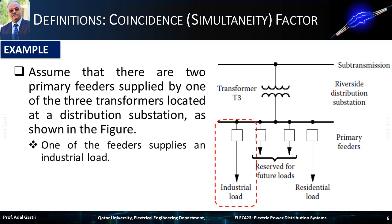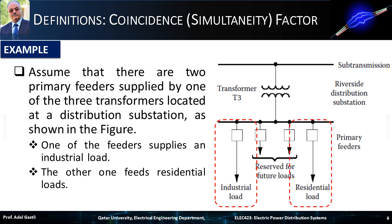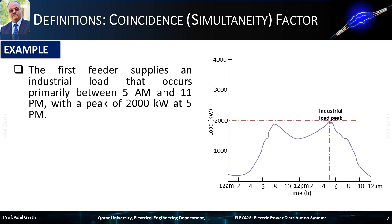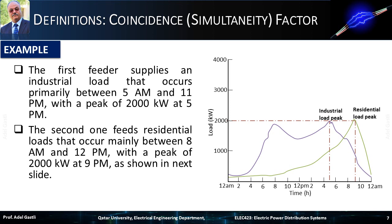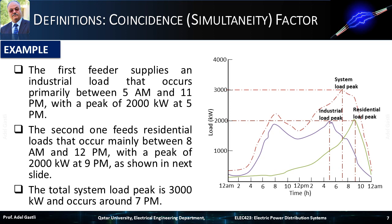One of the feeders supplies an industrial load; the other feeds residential loads. The first feeder supplies an industrial load that occurs primarily between 5 a.m. and 11 p.m., with a peak of 2,000 kW at 5 p.m. The second feeder feeds residential loads that occur mainly between 8 a.m. and 12 p.m., with a peak of 2,000 kW at 9 p.m. The total system load peak is 3,000 kW and occurs around 7 p.m.